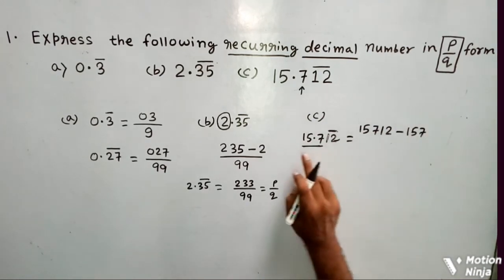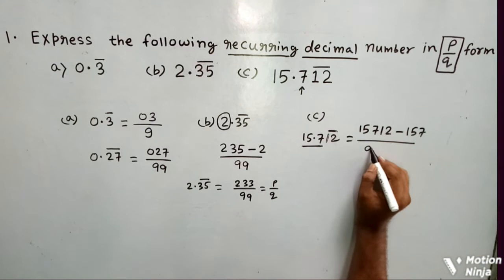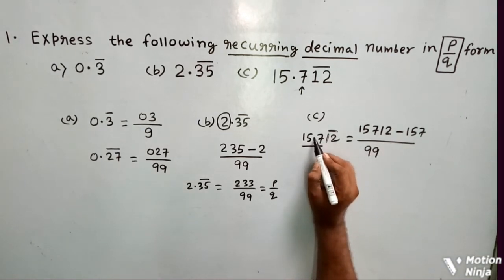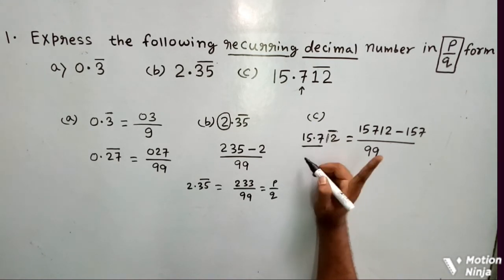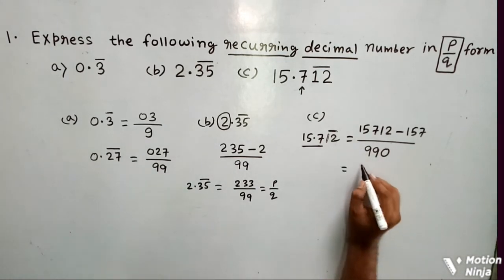...157 from this whole number. Now on how many digits is there a bar? Two digits. So you will write here two 9s. Now after decimal, how many digits have no bar? That's 7, meaning 1 digit. So you will write here a single 0. On solving you get 4.15555... by 990.